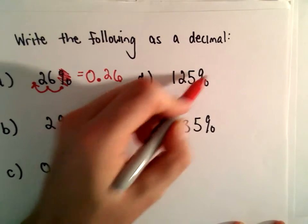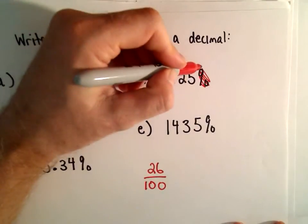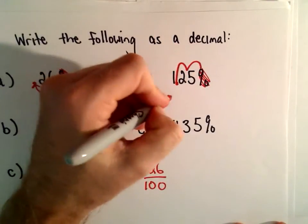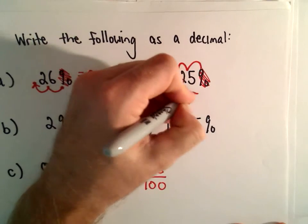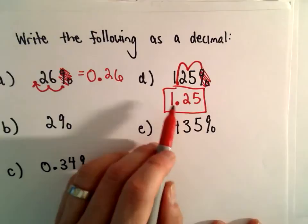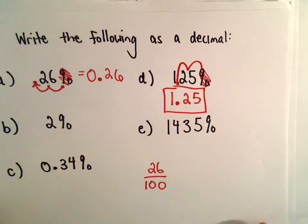So, 125%, let's get rid of the percent, move the decimal place two spots. So we would get 1.25. So 125% is equivalent to 1.25.